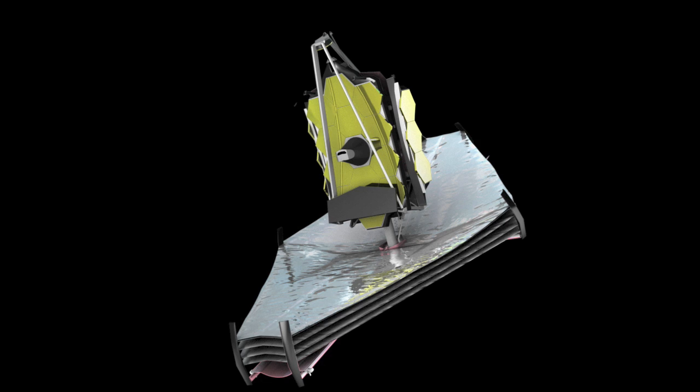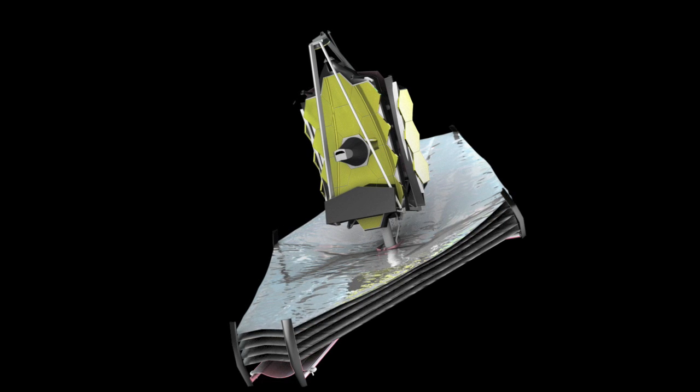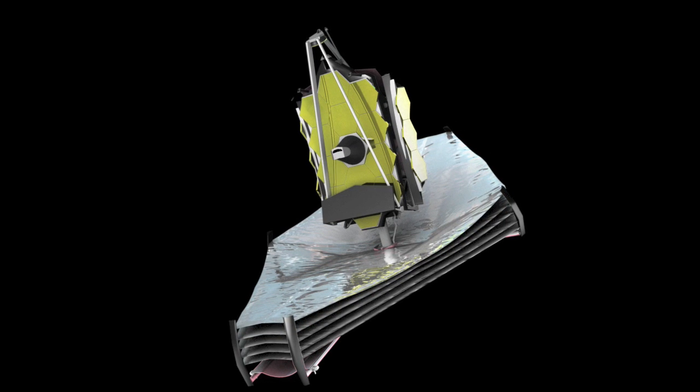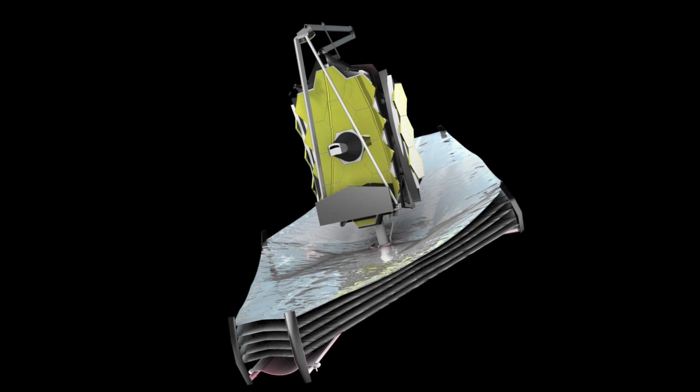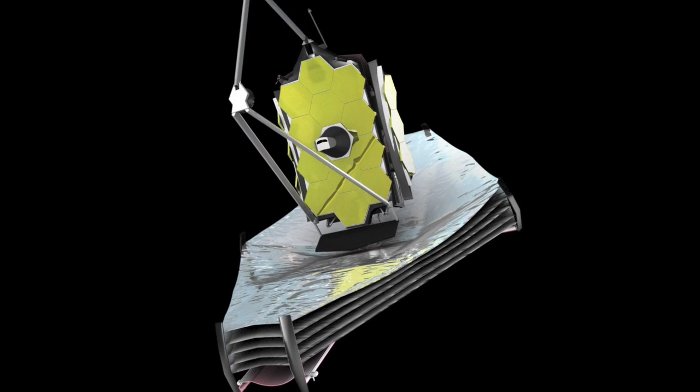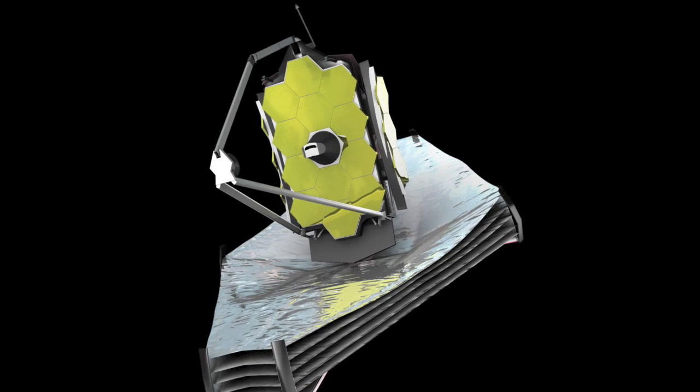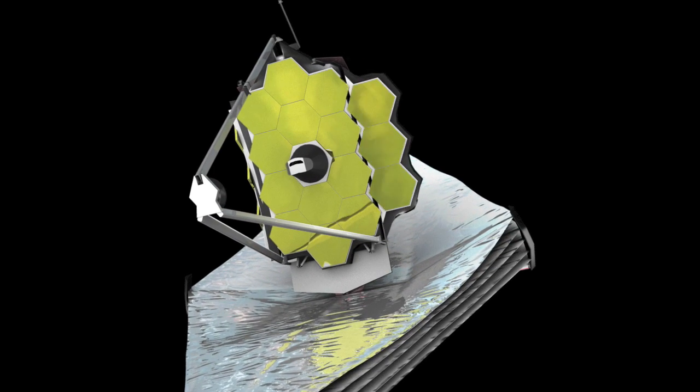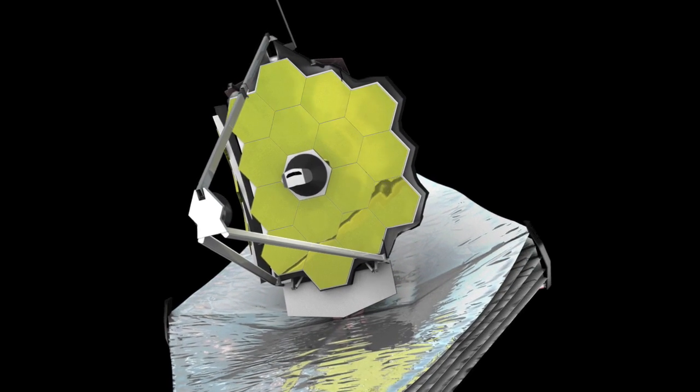The large primary mirror is made up of 18 hexagonal segments that will also unfold and move into position en route to L2. The James Webb Space Telescope mirror is designed to resolve the faintest detail possible for its size when observing near-infrared wavelengths.